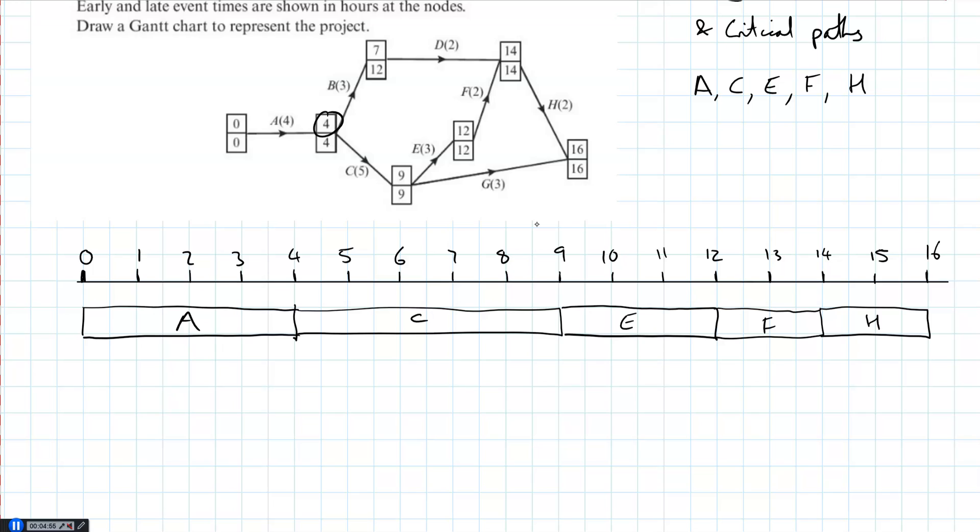So B can start at 4. So B's going to start here. It takes three days, so that'll take us up to 7. So we can fill B in here. But we have this float time, because it can go up to 12. So the float time is 12 minus 7, so the float time is 5. So because it goes up to day 12, I indicate float with a dotted box on my Gantt chart.